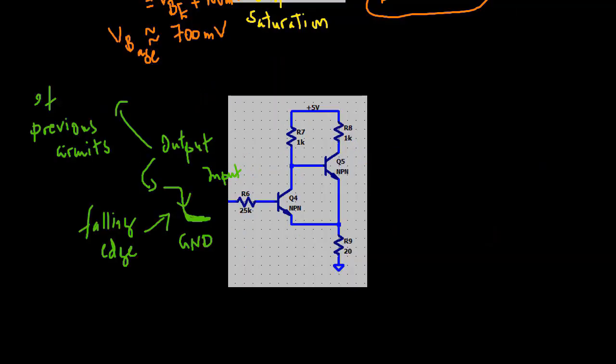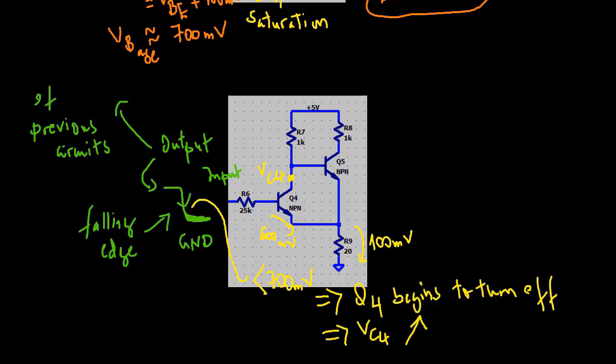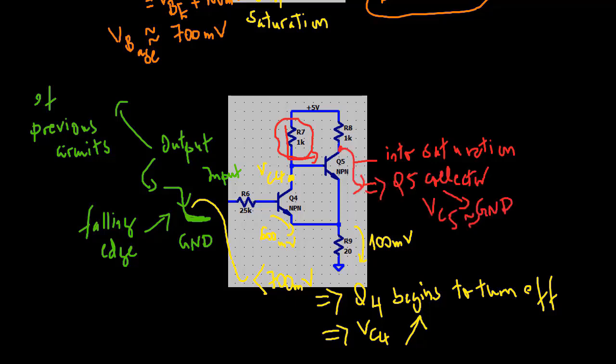After that with the trailing edge of the input pulse waveform whose voltage drops toward ground. As it drops below 700 millivolts Q4 begins to turn off so its collector voltage rises. Here the collector resistor R7 supplies current to Q5 putting it in saturation. So Q5's collector drops nearly to ground.